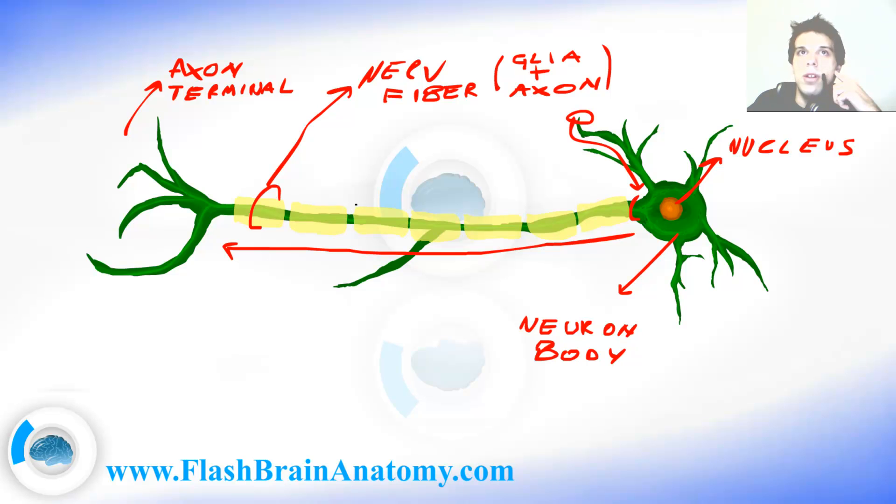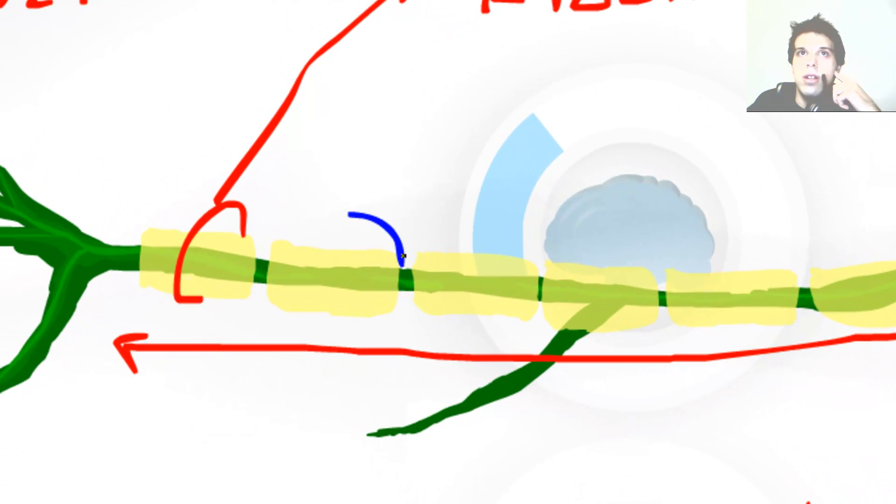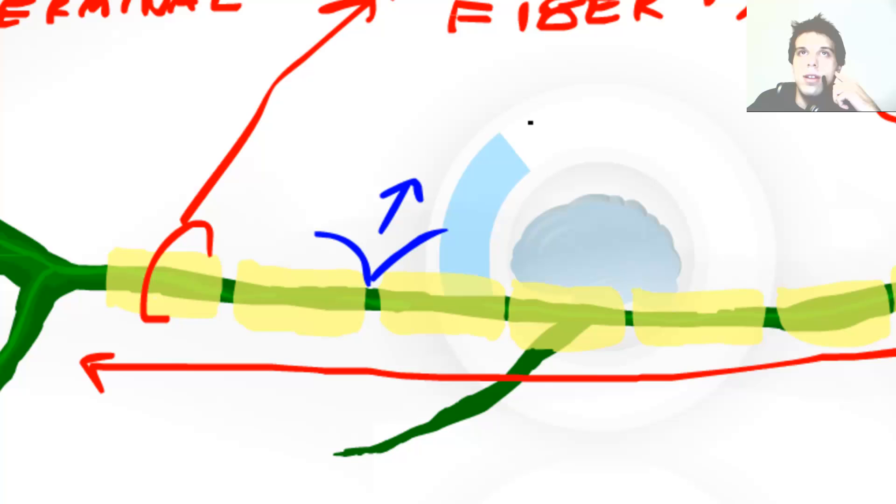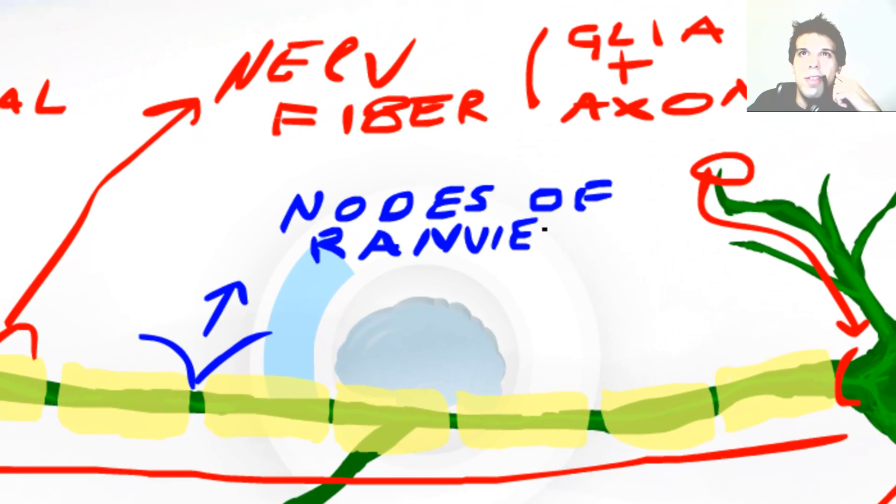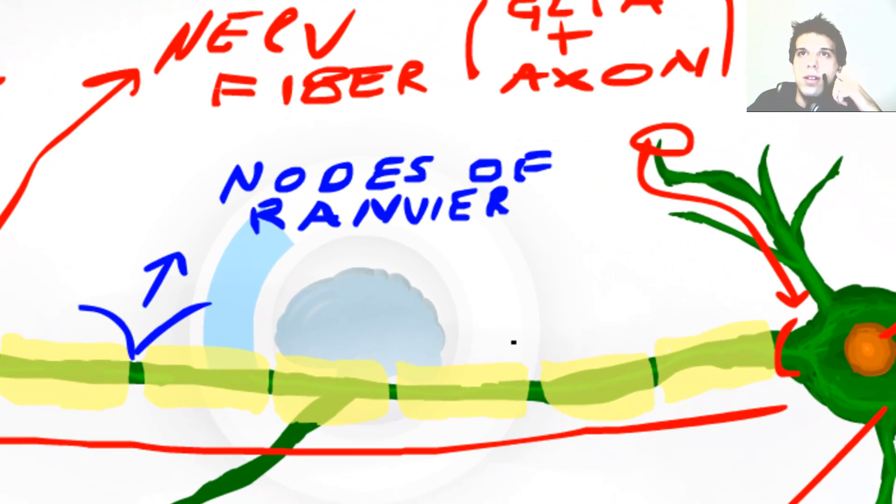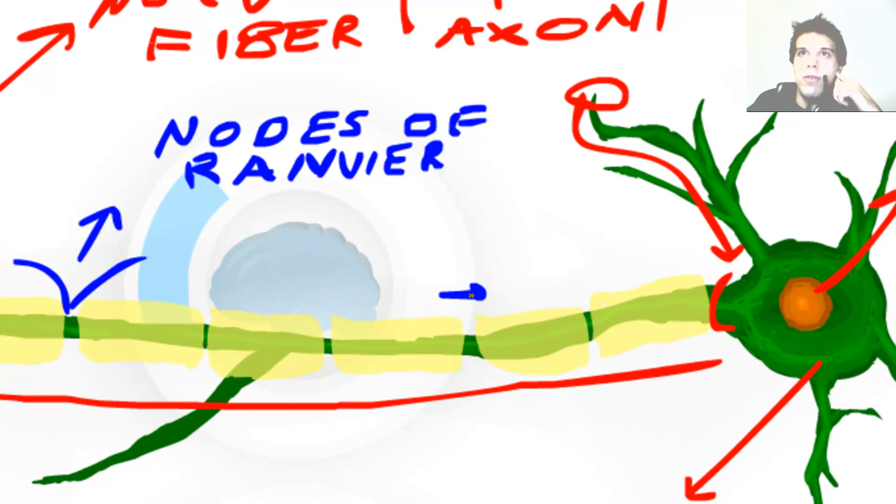Now you have probably noticed that there are gaps in the myelin sheet. Those gaps are called the nodes of Ranvier. They are approximately one micrometer long.